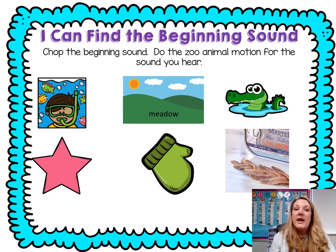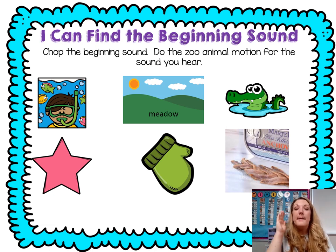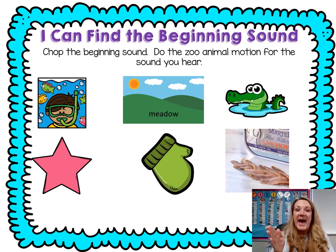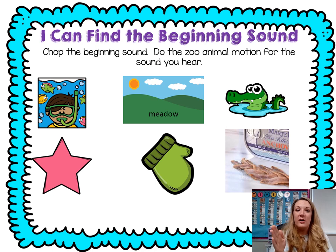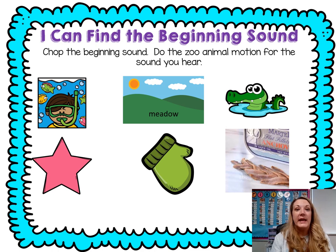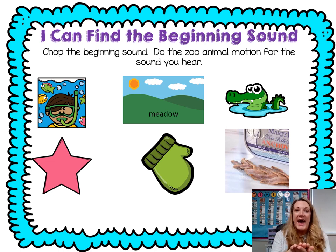Let's chop our beginning sound and do our zoo animal motion for the sound we heard at the beginning. Snorkel — ready? Snorkel. Meadow — eadow. Alligator. Star. Mitten. Anchovies. Now, anchovies are a kind of fish that some people like to eat and cook with. Anchovies — ah.